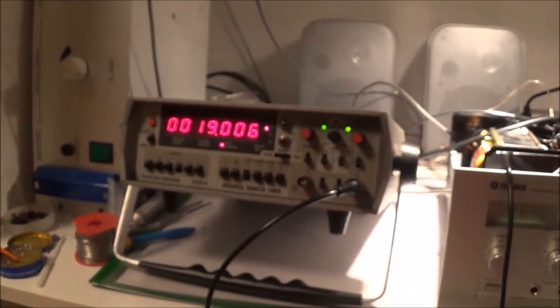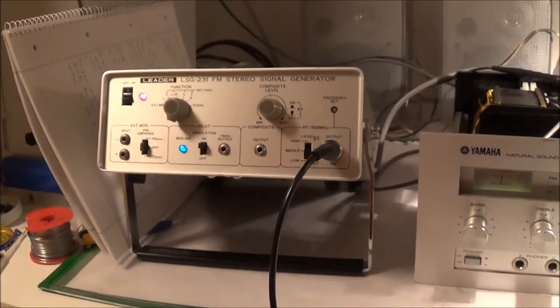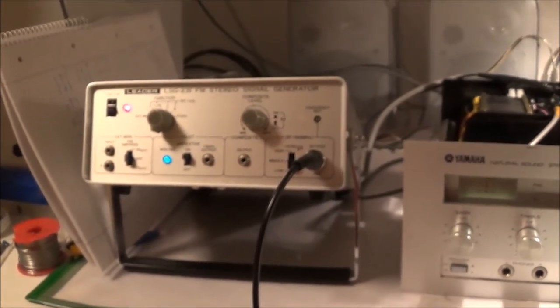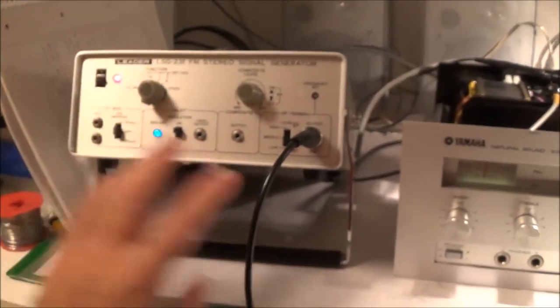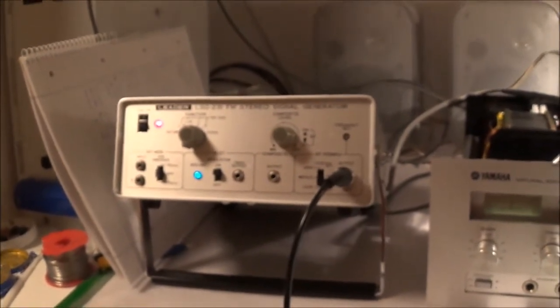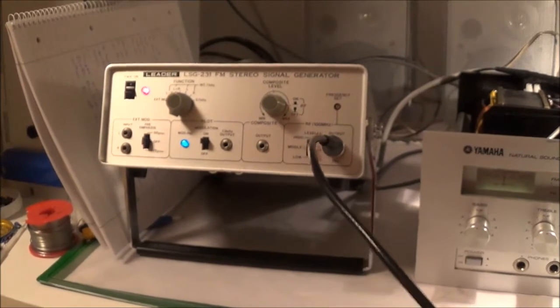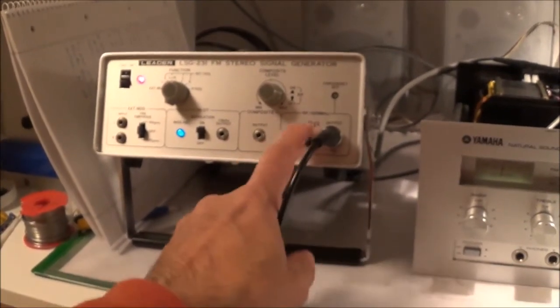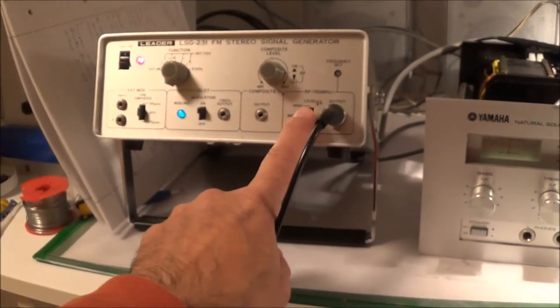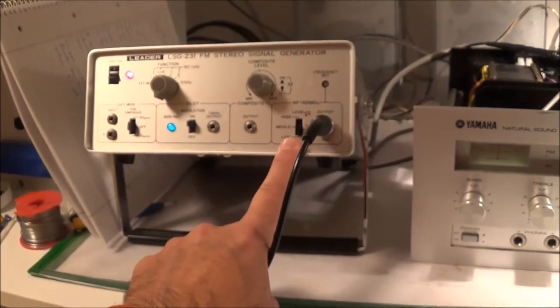For this test I'm going to be using my Leader LSG-231 FM stereo signal generator, which I got on eBay for about a hundred bucks or so. I really like this thing, it's not too stylish but it's very compact and easy to use. I've got my dual trace oscilloscope, and I've got the coax cable running that's going into the 75 ohm antenna input of the receiver. I'm going to feed in a pretty low level signal here, using basically the lowest output, like 0.1 millivolt or something like that.